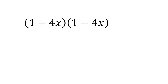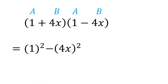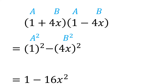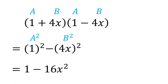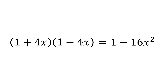If we have 1 plus 4x times 1 minus 4x, then we have a as 1 and b as 4x. Now instead of using the FOIL method, just take the square of 1, then subtract the square of 4x, which is equal to 1 minus 16x squared. So therefore, 1 plus 4x times 1 minus 4x is equal to 1 minus 16x squared.